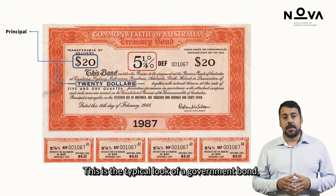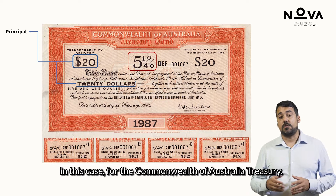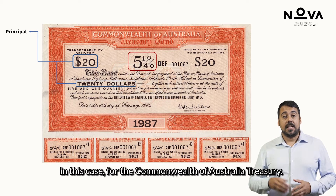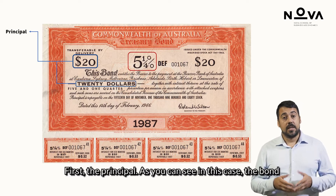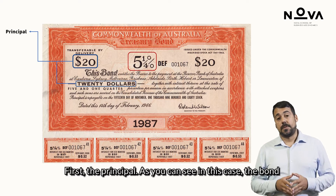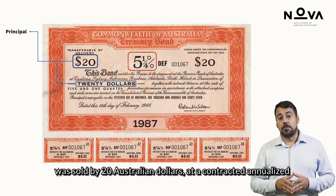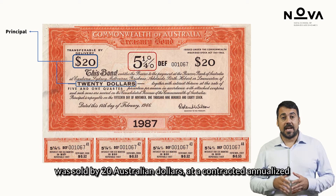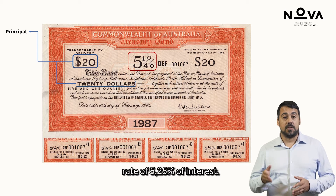This is the typical look of a government bond, in this case for the Commonwealth of Australia Treasury. It entails a number of elements that are informative with regard to its properties. First, the principal — as you can see, in this case the bond was sold for 20 Australian dollars at the contracted annualized rate of 5.25 percent interest.